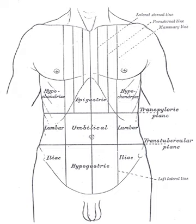Using the suprasternal notch as the north pole of the trunk and the upper border of the pubic symphysis as the south pole, he drew a vertical line joining these two points as his meridian. At the meridian's midpoint, he then drew a perpendicular line corresponding to the equator. As this transverse plane crossed the pylorus, he called it the transpyloric plane.